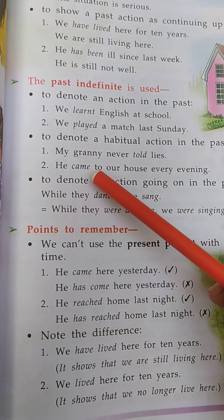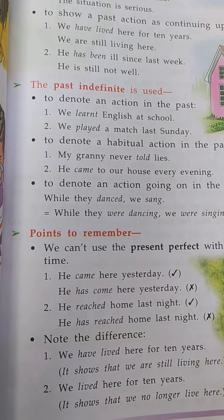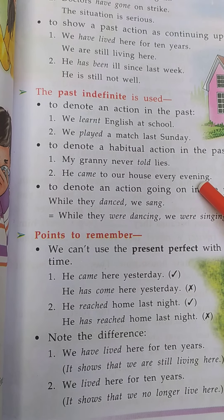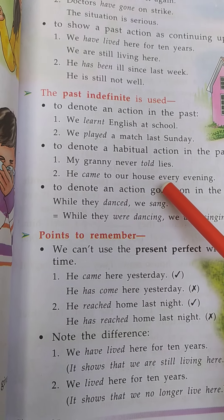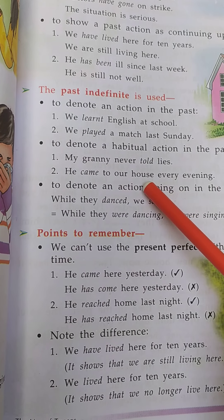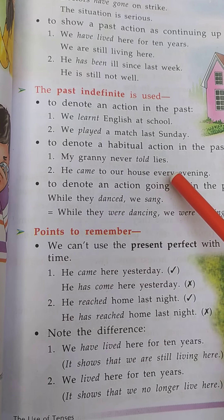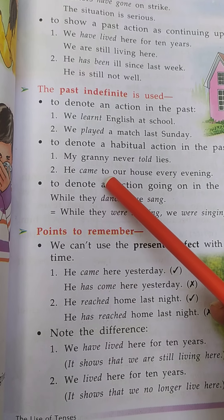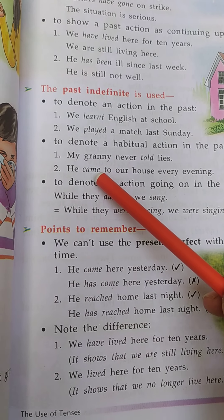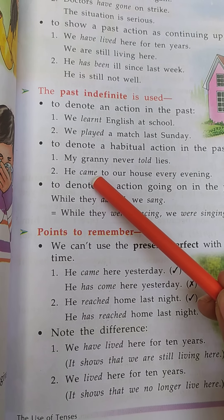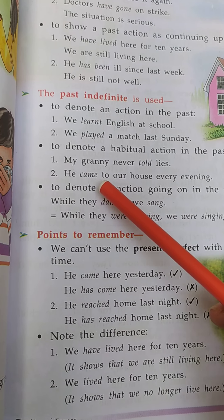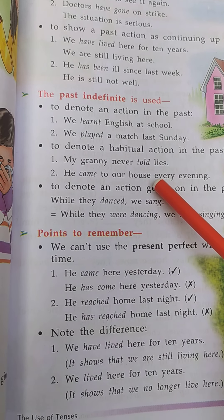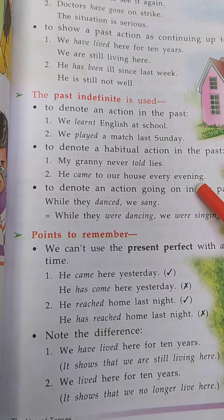Number two: he came to our house every evening. है ना, every evening उन्होंने हमारे घर पर आते थे — यह एक habitual action था। इस sentence में जो verb यूज़ हुआ है वो है came, जो कि come verb का V2 form है। इस sentence past indefinite tense में दिया गया है, क्योंकि यह past time का एक habitual action को show कर रहा है।